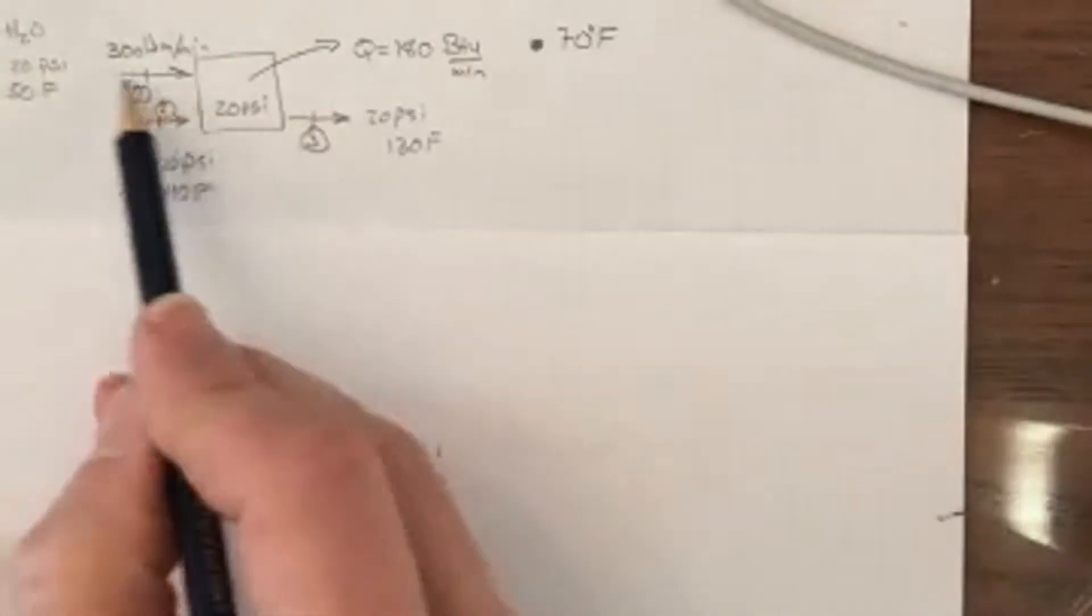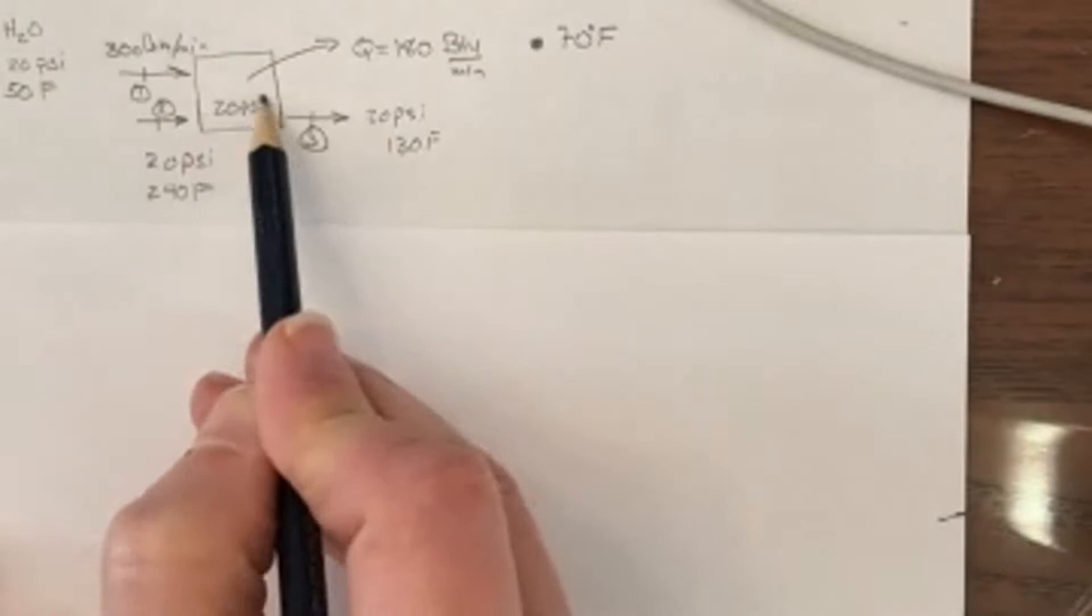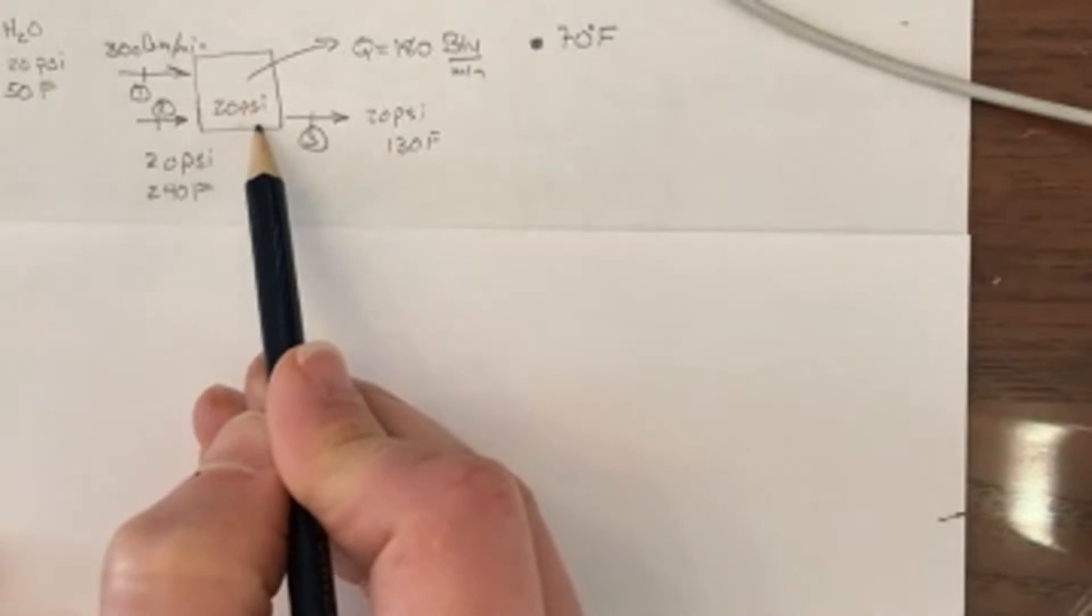Let's do this problem where we've got a mixing chamber. Imagine you have a mixing chamber and there's three streams - two are going in and one is coming out. The mixing chamber is maintained at 20 psi.